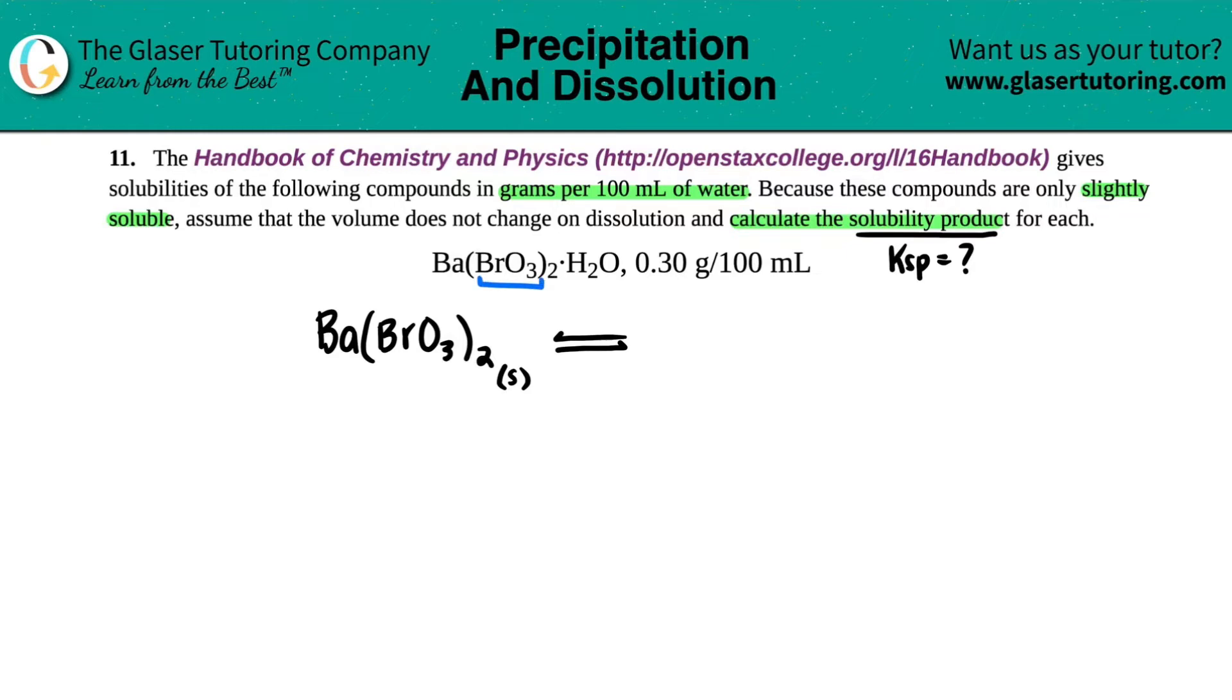Remember, polyatomics stay together. So the break has to be between the barium and the bromate, BrO3. So we have Ba plus BrO3. Now we just need those ions in the upper right-hand corner because they're going to be dissolving. They need charges, but just use your subscripts. There is one barium and two bromates.